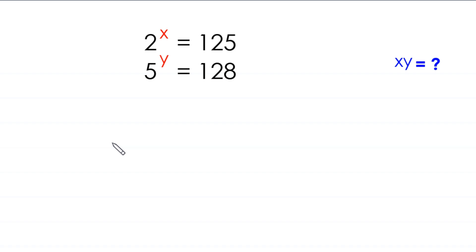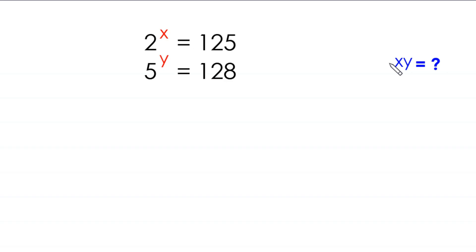Hello everyone, you are welcome to how to solve this very nice system of equations. 2 to the power x is equal to 125 and 5 to the power y is equal to 128. Our job is to find all possible values of x times y.